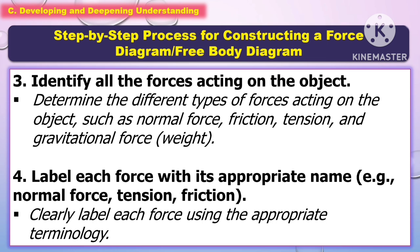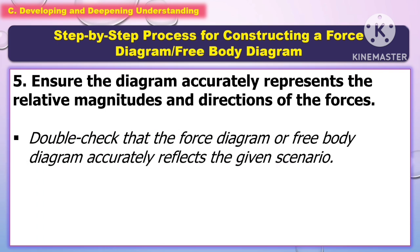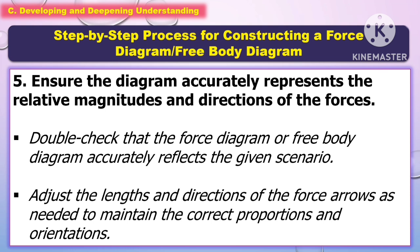For the fourth step, label each force with its appropriate name — for example, normal force, tension, and friction — clearly using the appropriate terminology. For the final step, ensure the diagram accurately represents the relative magnitudes and directions of the forces. Double-check that the force diagram or free body diagram accurately reflects the given scenario, and adjust the length and direction of the force arrows as needed to maintain correct proportions and orientations.